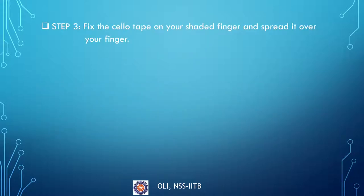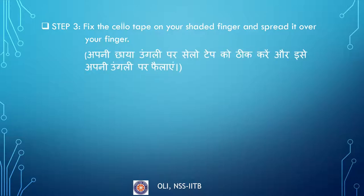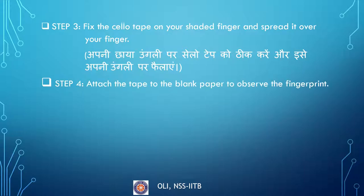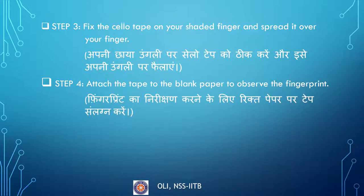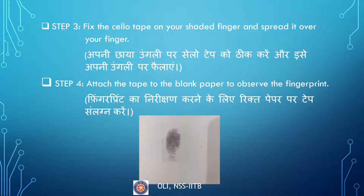Step three: Fix the sellotape on your shaded finger and spread it over your finger. Apni chhaaya ungliyon par sellotape ko tik karo aur isse apne ungliyon par failaao. Step four: Attach the tape to the blank paper to observe the fingerprint. Fingerprint ke nirikshan karne ke liye rikt paper par tape sanlagn karo.